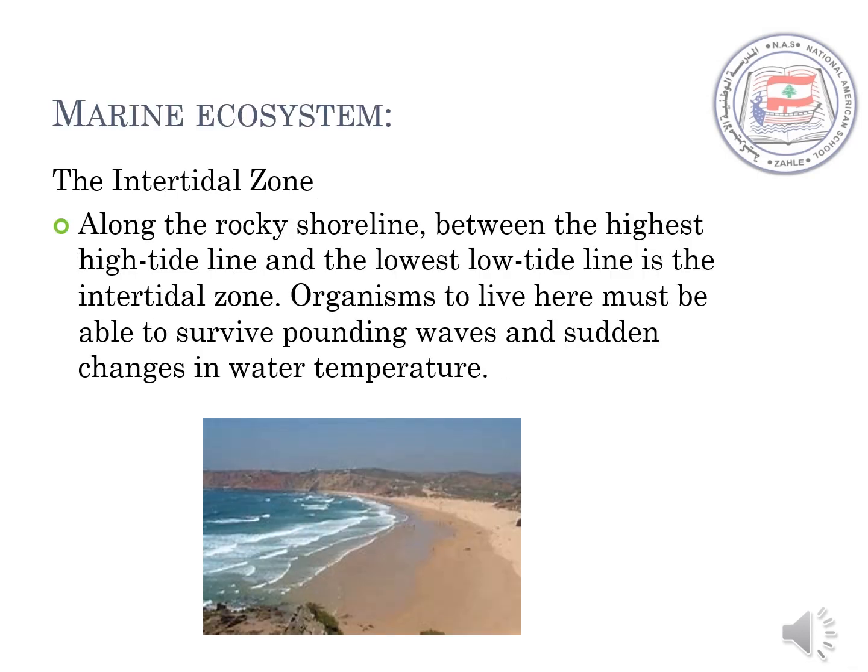The second zone of the marine ecosystem is called the intertidal zone. Along the rocky shoreline between the highest high tide line and the lowest low tide line is the intertidal zone. Organisms that live here must be able to survive pounding waves and sudden changes in water temperature.